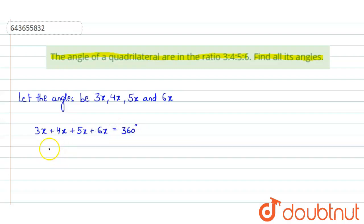Solving this equation: 3x + 4x = 7x, 7x + 5x = 12x, and 12x + 6x = 18x. So 18x = 360 degrees, which gives us x = 20 degrees.